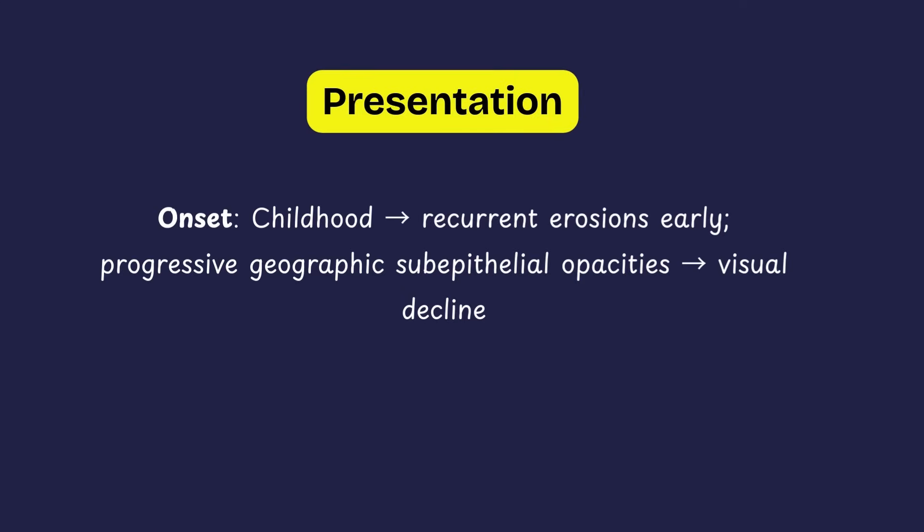Patients present with severe recurrent corneal erosions from a very young age, sometimes even soon after birth. These erosions are typically more severe in RBCD compared to Thiel-Benke corneal dystrophy. While recurrent erosions can occur in other epithelial dystrophies, in RBCD the vision loss usually develops in the second and third decades, and in severe cases it can even occur in the first decade of life.